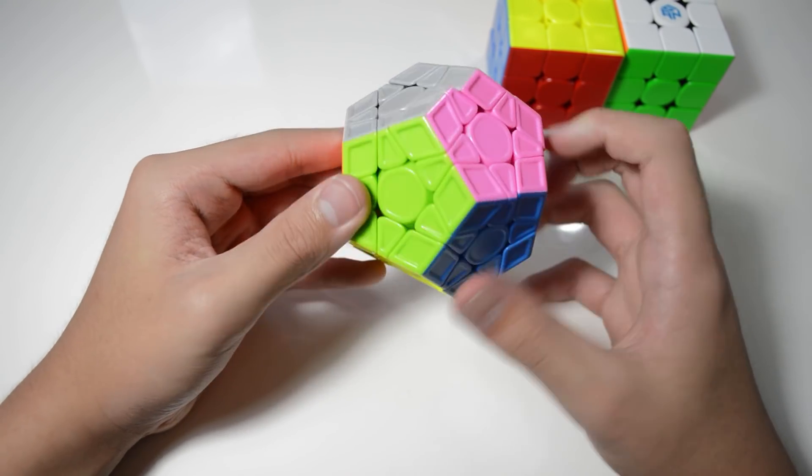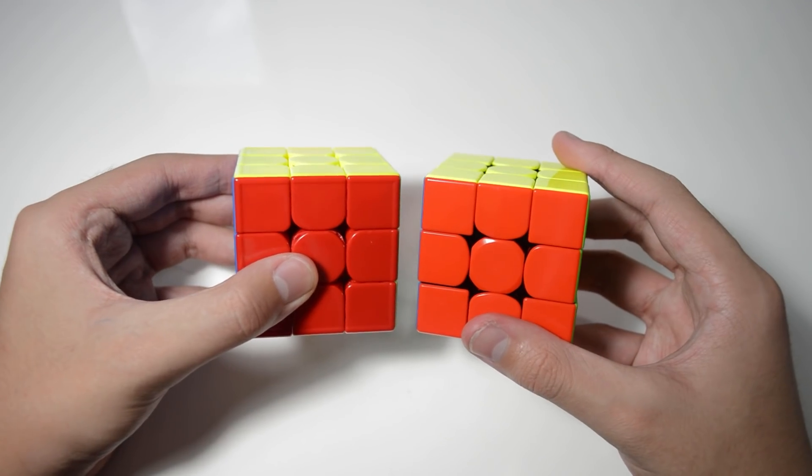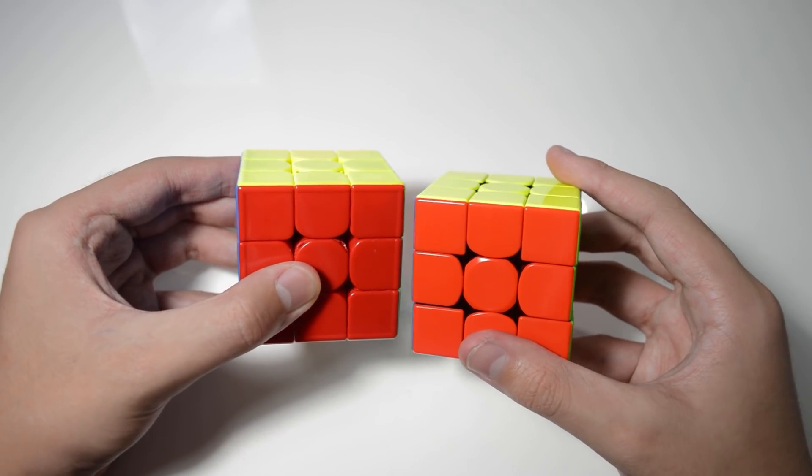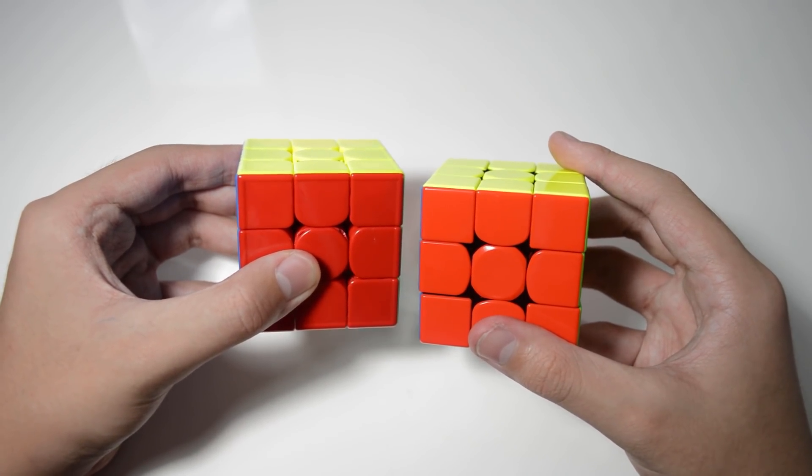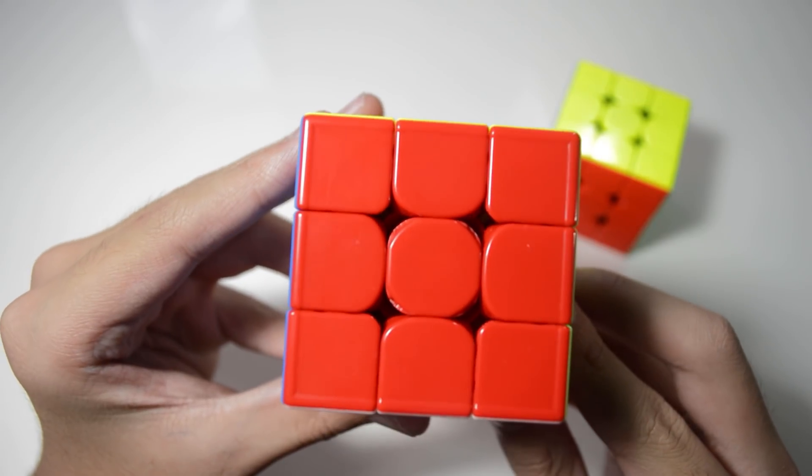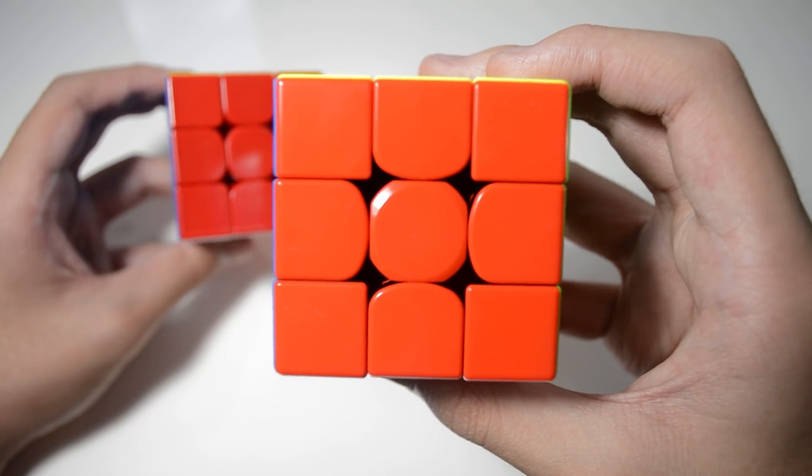The 356X is the same size and has no striking external features. One difference between the two cubes I can notice however are the corner pieces, with the GTS-3M being rounded off and the 356X being left sharp.